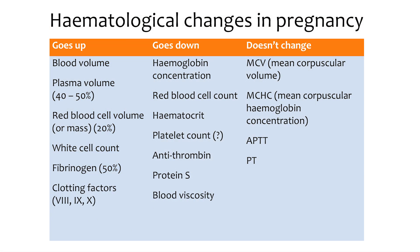Let's work through these variables and work out what goes up, what goes down, and what remains the same. What goes up? Blood volume goes up. Plasma volume goes up by about 40 to 50%. Red blood cell volume or mass goes up by about 20%. White cell count goes up. Fibrinogen level goes up by about 50%, and clotting factors like factor 8, 9, and 10 go up.